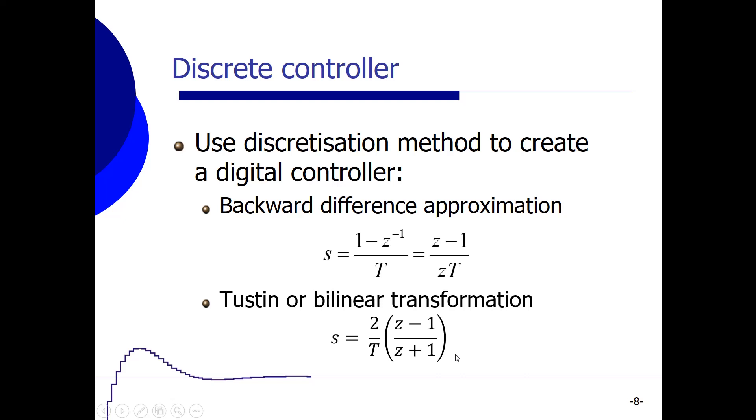So in this case, we have learned how we can tune also a discrete controller by using the Ziegler and Nichols rules, and we have seen how we can transform that continuous time controller to a discrete controller by using one of these approximation methods. Thank you for watching, see you next time.